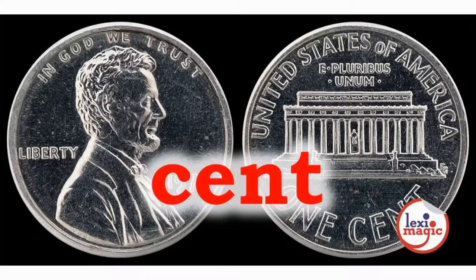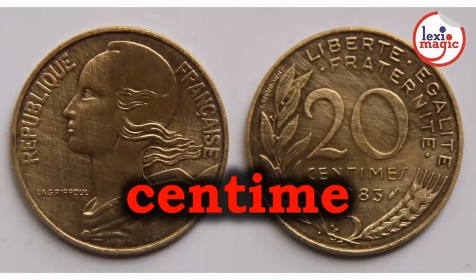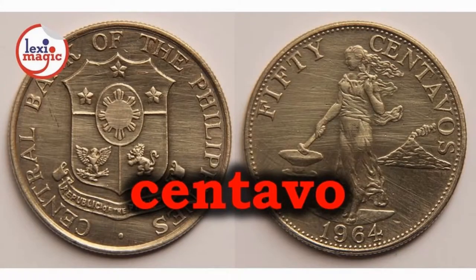Cent is 100 of a currency, usually of a dollar or a euro. Centesimo is one hundredth of the Italian currency, lira, until the euro was adopted. Centime is one hundredth of a franc. Centavo is one hundredth of a monetary unit of many Spanish and Portuguese-speaking countries.